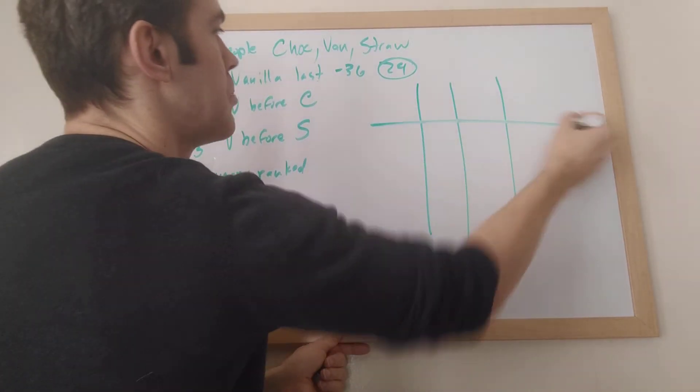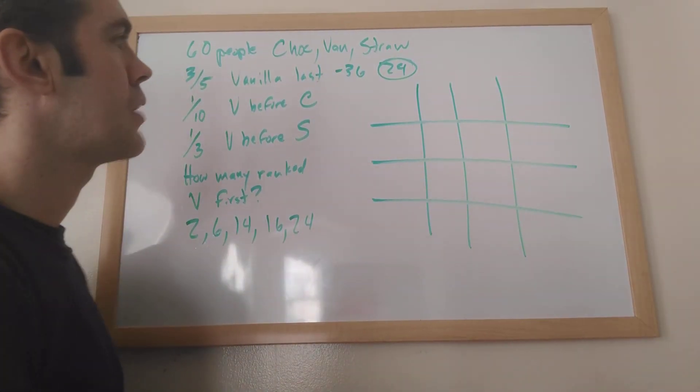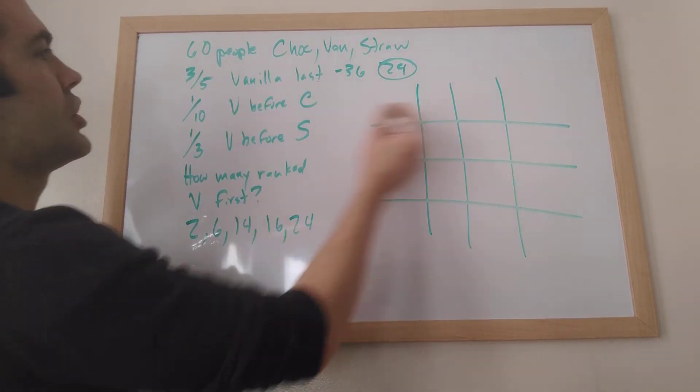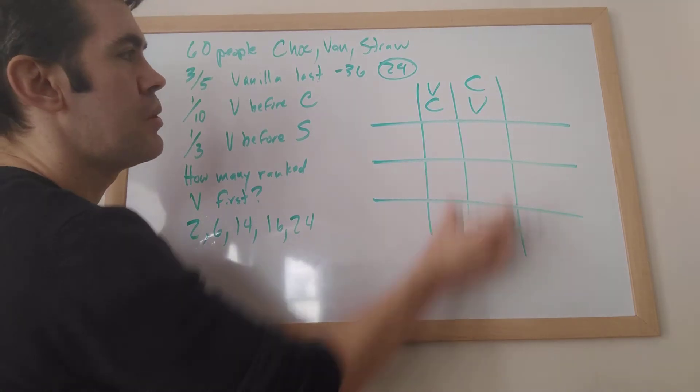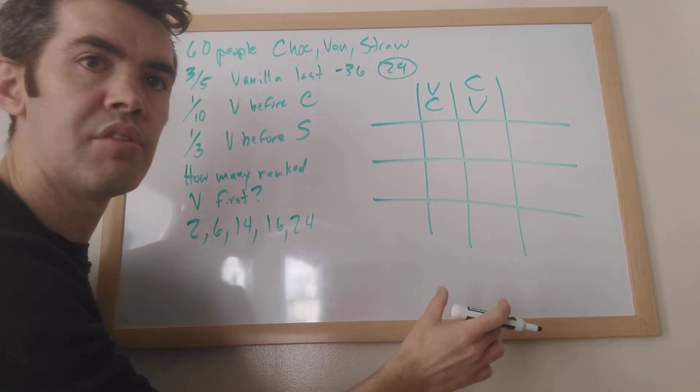Once we've figured that out, we can make our triple overlapping set table, okay? And label it like this. Vanilla before chocolate, chocolate before vanilla. So between these two categories, you've got everything covered. Over here, this is going to be vanilla before strawberry or strawberry before vanilla.